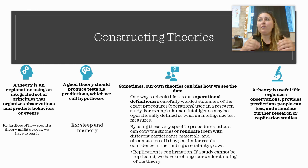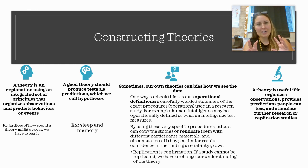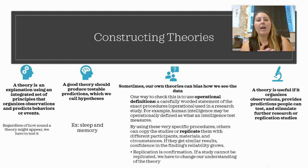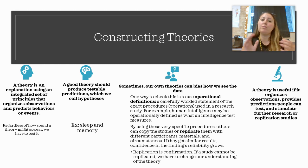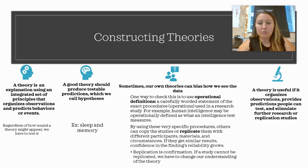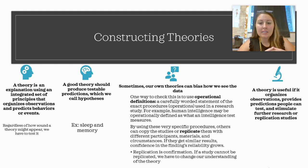There are a bunch of different safety mechanisms that researchers in psychology put in place to make sure bias doesn't happen. One way to check bias is by using operational definitions.